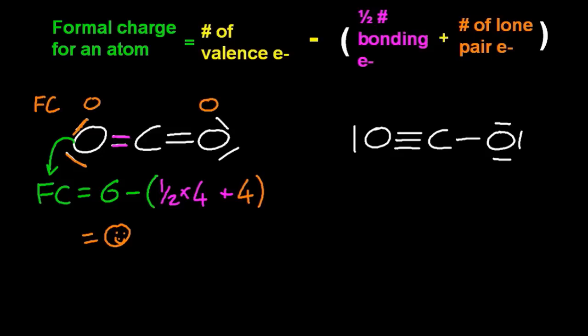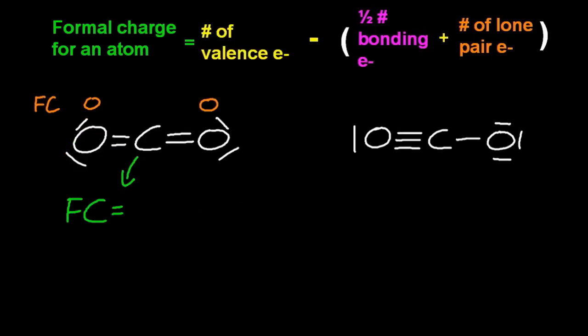For the carbon in the middle, it's got four valence electrons. It is in group four. Half of the number of bonding electrons is going to give me half of eight. And there's no lone pairs. Well, I suppose we could stop here, but that's looking the favored structure.